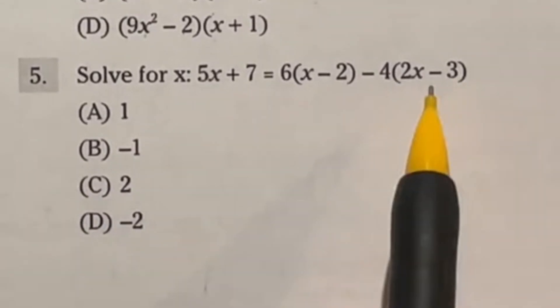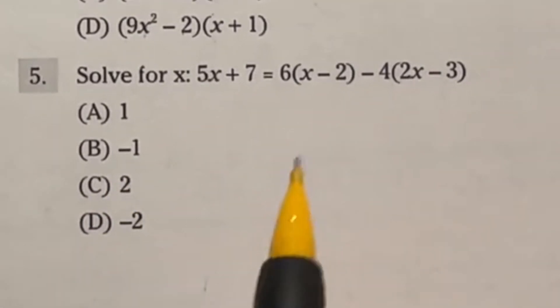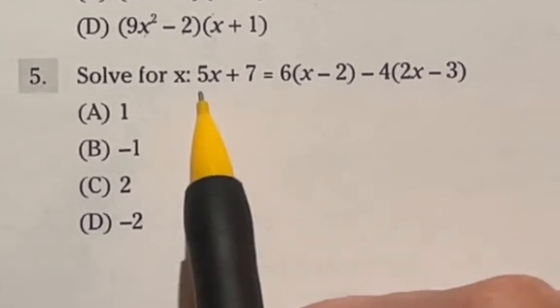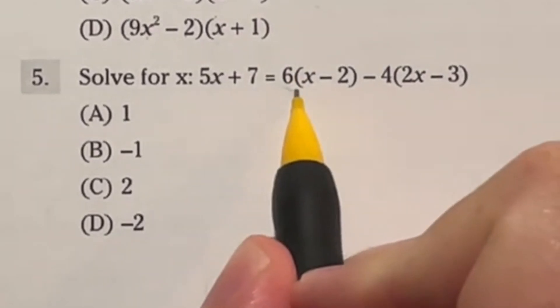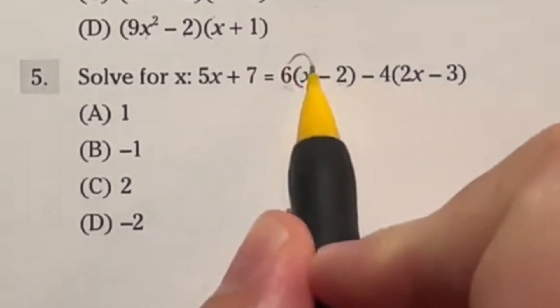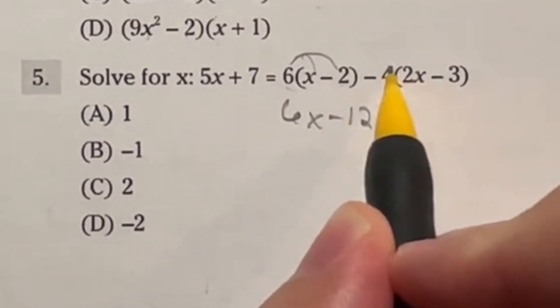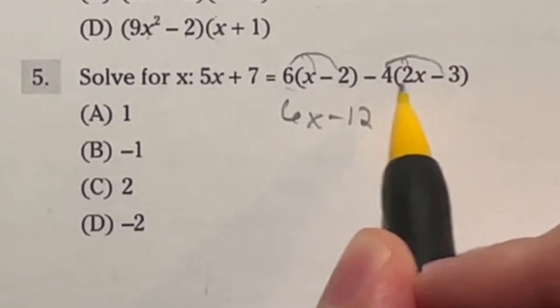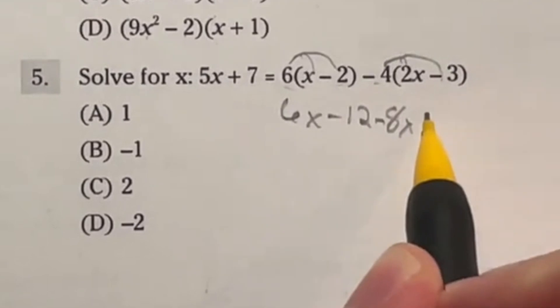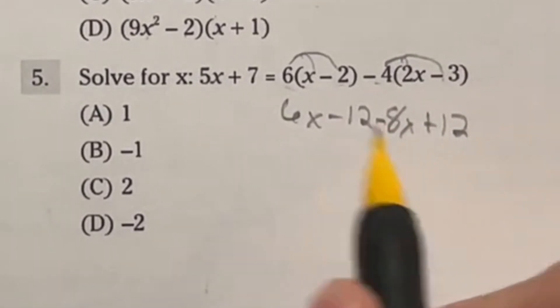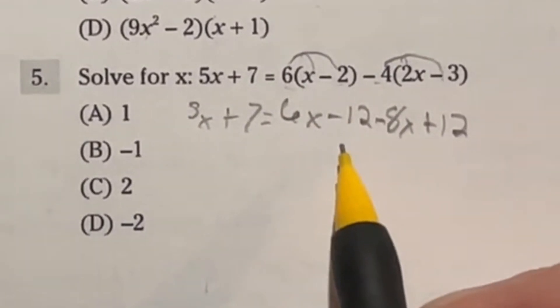Two options for a question like this. Number one, you can either just solve for x doing all the steps. Number two, you can plug these numbers in and see which one gives you the correct answer. So in this case, it says solve, I'm just going to go ahead and solve it out. You plug them in, we'll see who gets done first. It says here, 6 times the x minus 2, I got to distribute that to both. So that's going to give me 6x minus 12. Then we have minus 4 being distributed to these two. So minus 4 times 2x is going to give me negative 8x. And that's going to be negative times a negative will give me a positive 12.